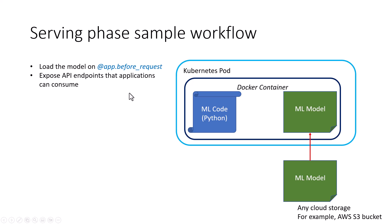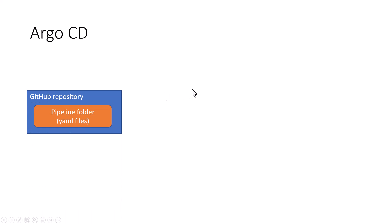SAP AI Core is not a tool for developing machine learning code, but rather a tool for turning machine learning code into a production-ready system. Now that we know what SAP AI Core can do, let's look at some of the important components of SAP AI Core. SAP AI Core uses a Kubernetes cluster to deploy the machine learning applications.